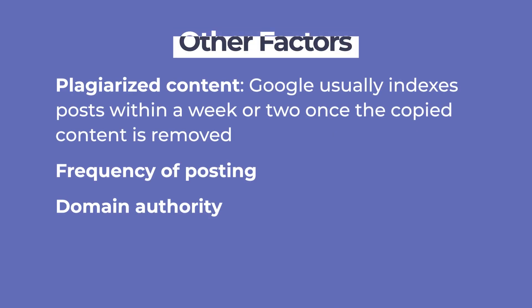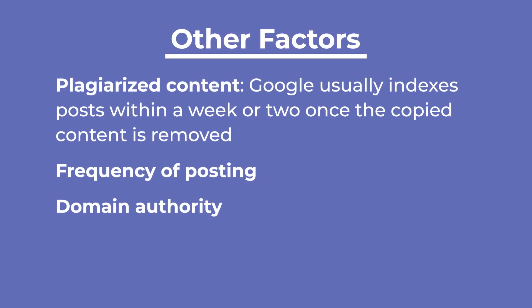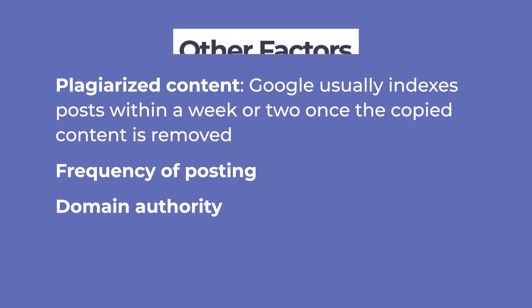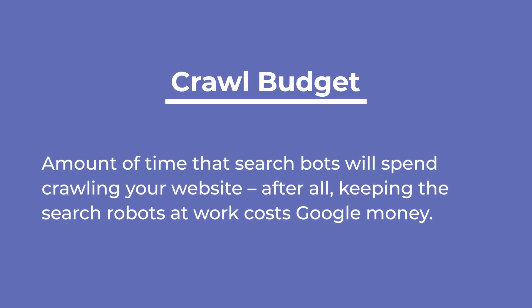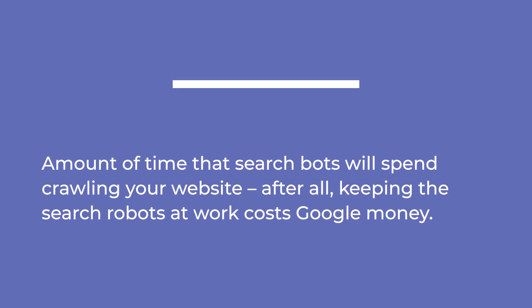Plagiarized content also stops a page from being indexed. Google usually indexes posts within a week or two once the copied content is removed. Other factors include the frequency of posting and your website's domain authority, among many more. All of these aspects, especially the last two, affect the crawl budget that Google assigns to your website. When we say budget, we're talking about the amount of time that search bots will spend crawling on your website. After all, keeping the search bots at work costs Google money.